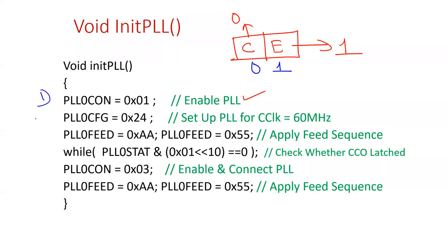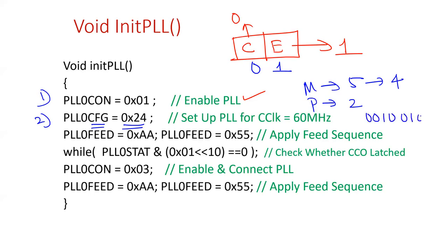Once enabled, configure M-select and P-select using PLL0CFG. M-select = 5 (we load 4), P-select = 2. The value of PLL0CFG = 0x24, which is 0010 0100 in binary — the lower 5 bits give M-select = 4 and bits 5–6 give P-select = 2. Immediately after writing the configure register, you must issue the feed sequence: write 0xAA then 0x55 in the same order, like inserting an ATM card and entering the PIN, for the microcontroller to process the configuration.